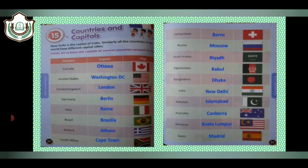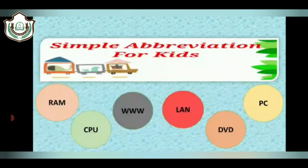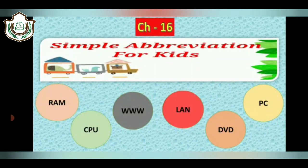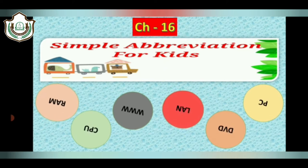This is your book exercise. I hope you all are able to do this comfortably. Our next chapter is about abbreviations. Do you know what abbreviations are? An abbreviation is a shorter form of a word. When a word is too big, we create a shorter form for it. Here we have some important abbreviations which we use in our daily life, like RAM, CPU, WWW, LAN, DVD, and PC.